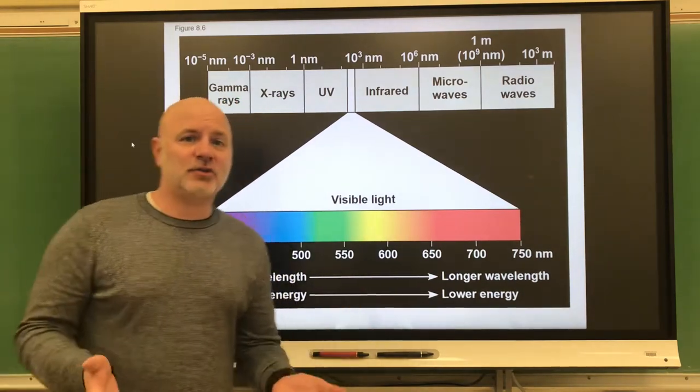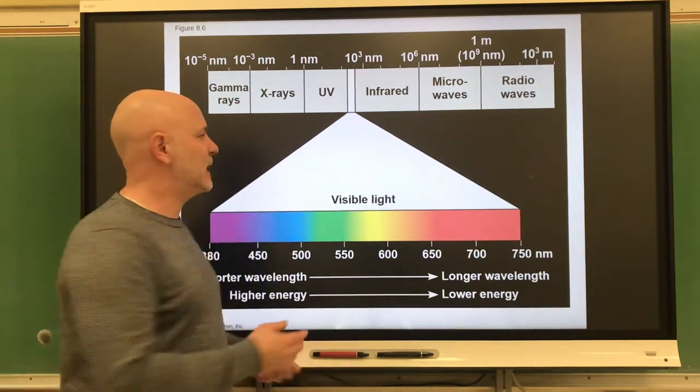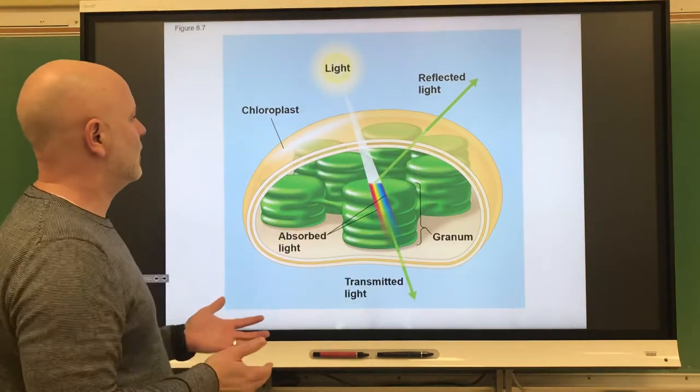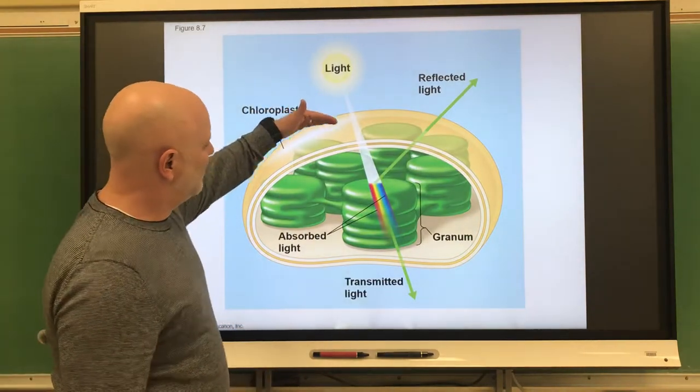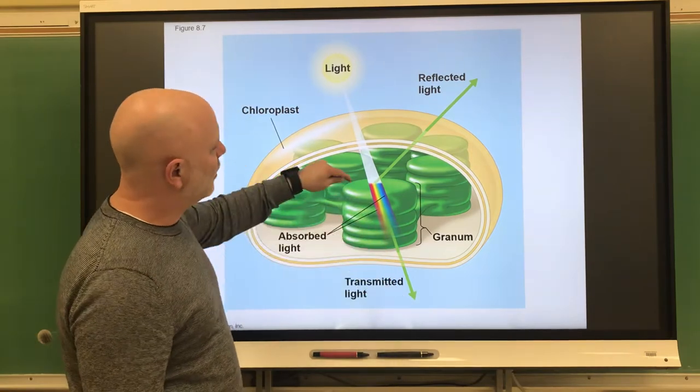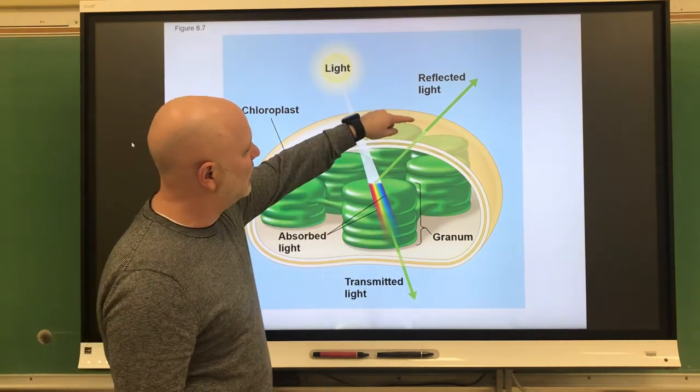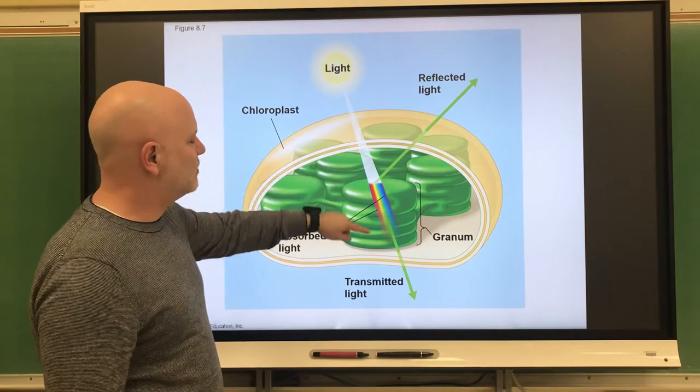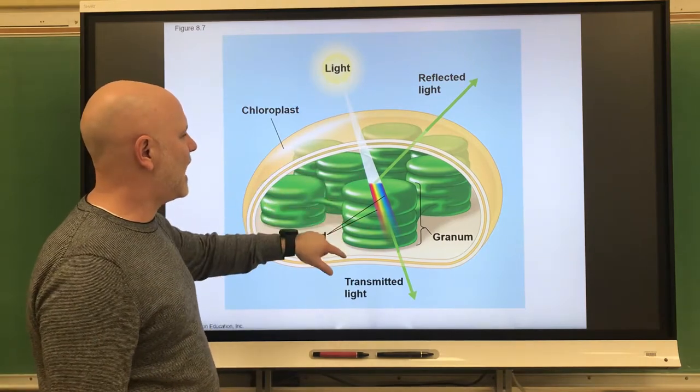When light strikes an object, one of three things can occur, and that's what we see here on this next slide: light can be transmitted, and transmitted means it passes through, or it can be reflected, meaning it's given off, or it is absorbed by that object.